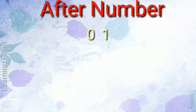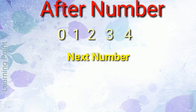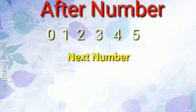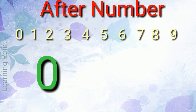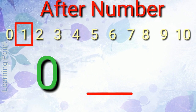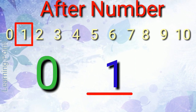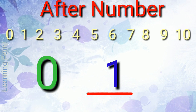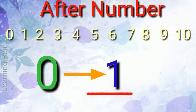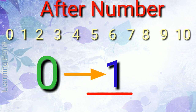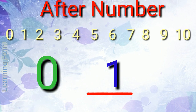After number means next number. If I write 0 here, then what comes next? That is 1. So 1 is after 0. I indicate this number by forward arrow.